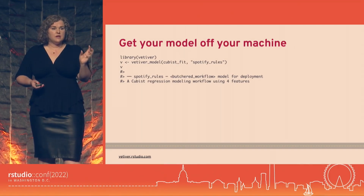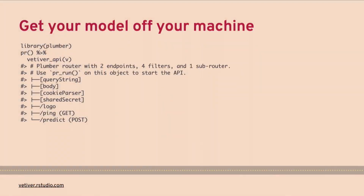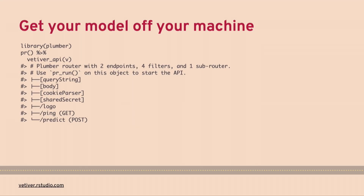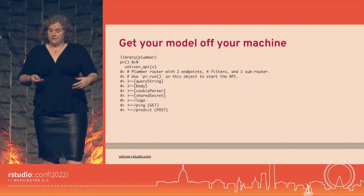Once we have that deployable model object, the process of spinning up an API is quite ergonomic — that was our goal. On the R side we use the plumber package, and once you have a plumber router initialized, it is literally just one line of code to spin up your model-aware API that's ready to serve predictions at an endpoint. This is what we mean by ergonomic — letting you be expressive, fluent, and get your job done.